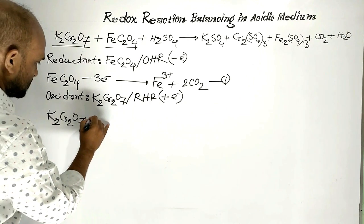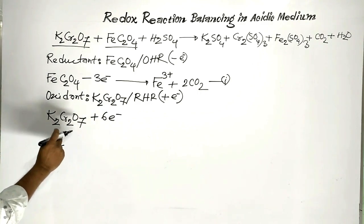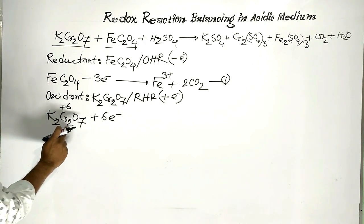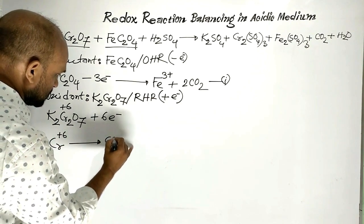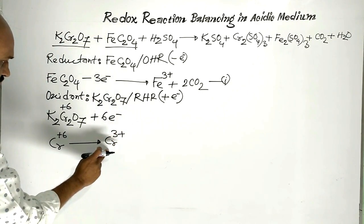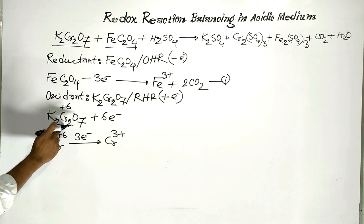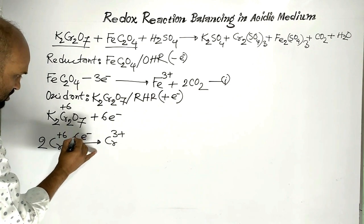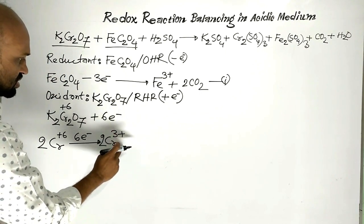Potassium Dichromate accepts six electrons. The oxidation number of Chromium here is +6. There are 2 Chromium atoms, so the oxidation number of each Chromium is +6. Each Chromium changes to Chromium 3+ ion by accepting three electrons. Since there are two Chromium atoms, two Chromium atoms accept six electrons total, and as a result two Chromium 3+ ions are formed.